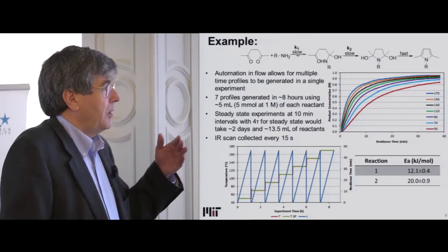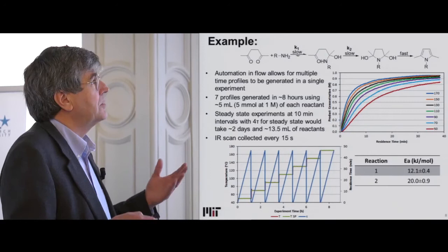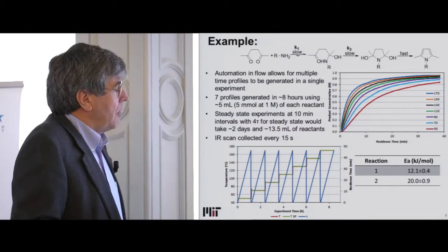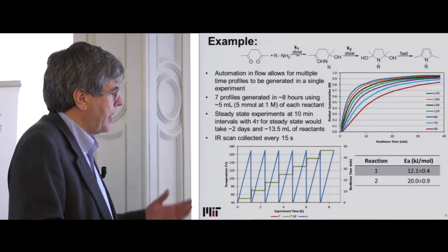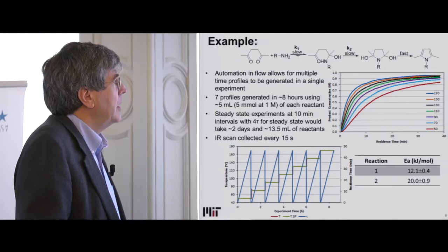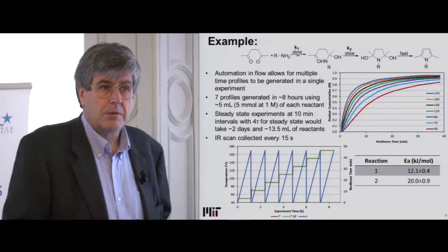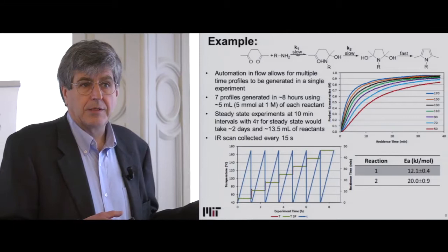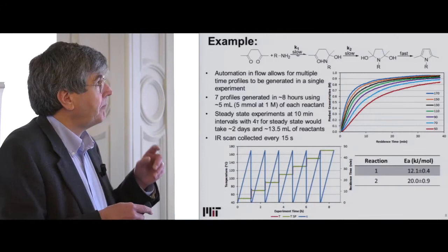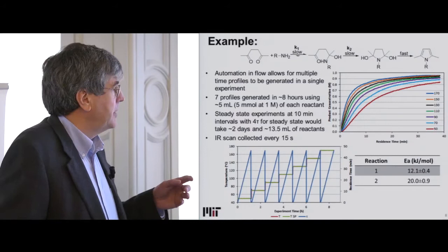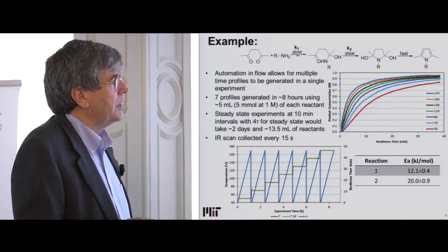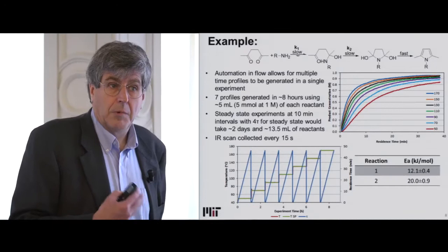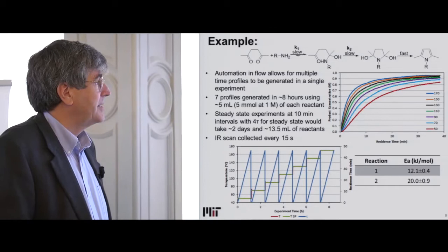You can combine this with computer control. As an example using a Paul-Norre reaction with two steps, the computer sets the temperature and ramps the residence time by changing the flow rate from fast to slow, tracing out one curve. We go to another temperature and do the same thing. In a span of eight hours using just five millimoles of materials, you have traced out all the information needed to get the kinetics for this reaction. There are two first-order reactions in there and we can get the activation energies. If you were to do this at steady state, you would have data points at 10, 20, 30, 40 — less data for more material and longer time to run the experiments.